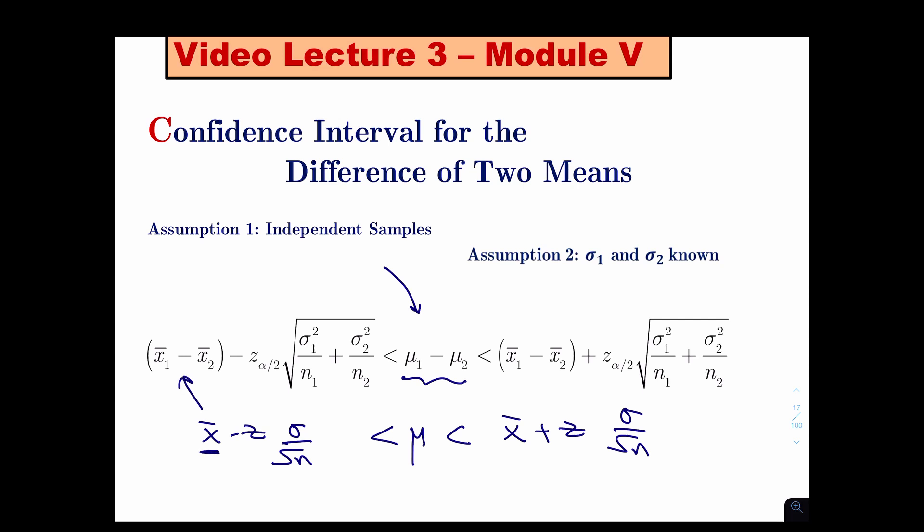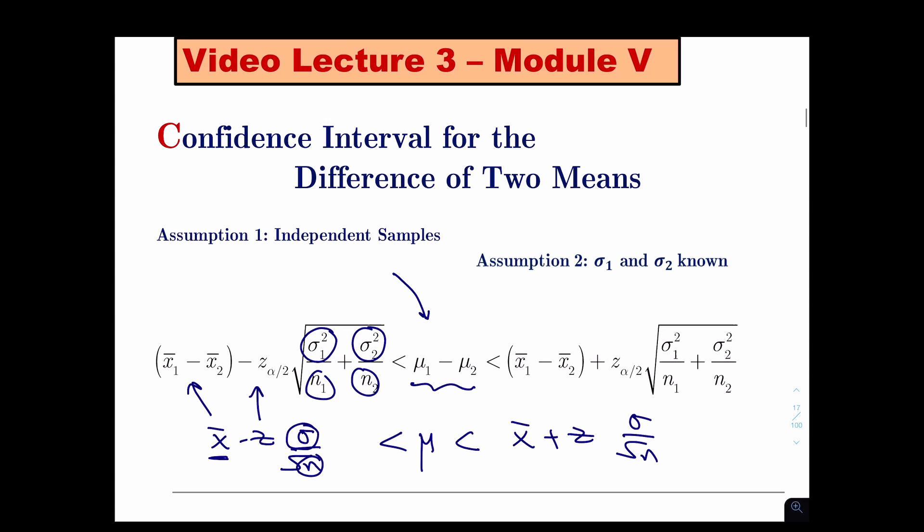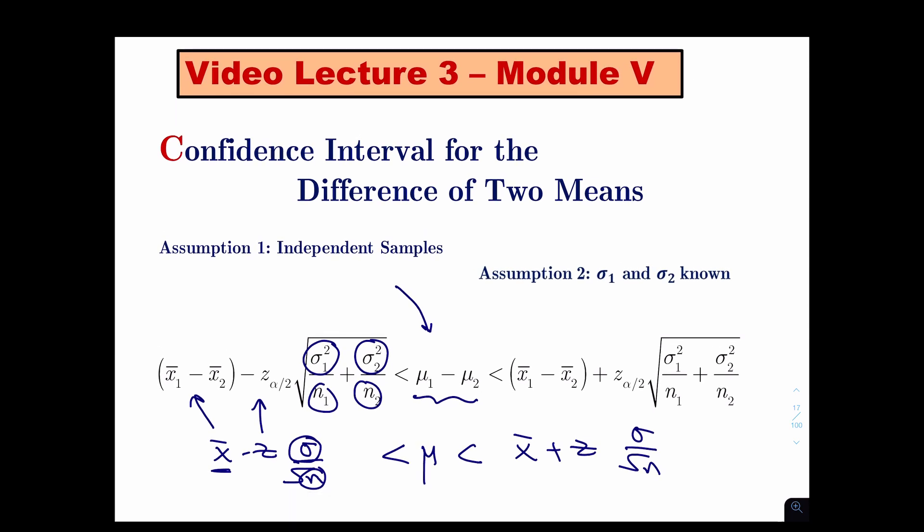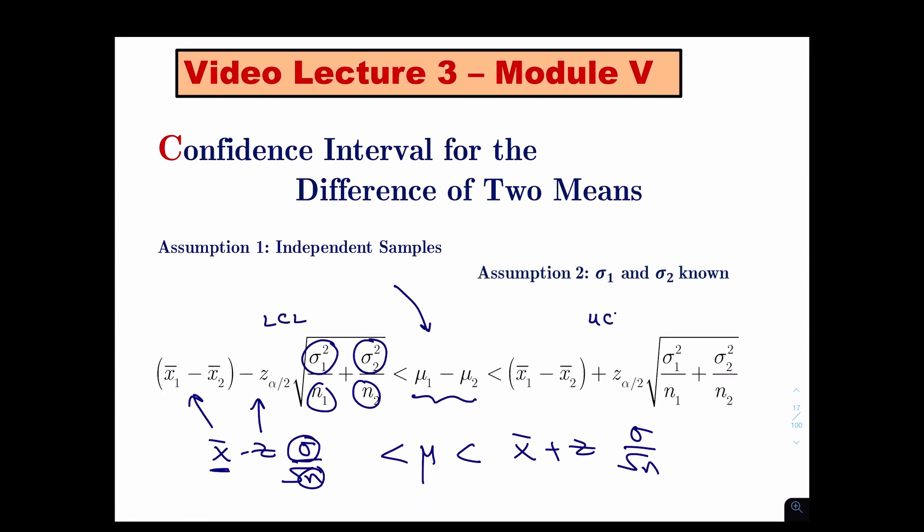Instead of x bar, now you have x1 bar minus x2 bar. Z is just z. Instead of one sigma, you have two sigmas because you have two populations. Instead of n, you have two n's. So it's really just double the number of variables. It makes no difference since we're going to be doing this with Excel anyways, to figure out the lower confidence limit and the upper confidence limit. Everything else is pretty the same. Excel command to find the z score is the same, and the values are either given to you, which means you'll just straight up plug it in, or I'll give you two sets of numbers in which you'll have to find the x1 bar, x2 bar, sigma one, sigma two all yourself.